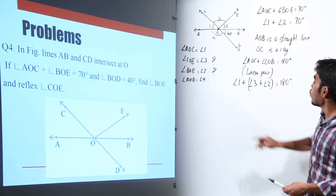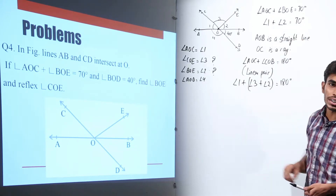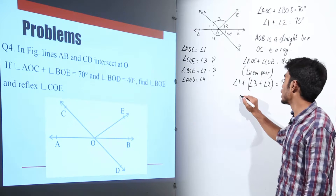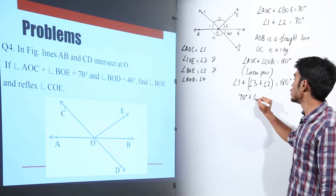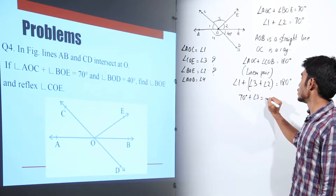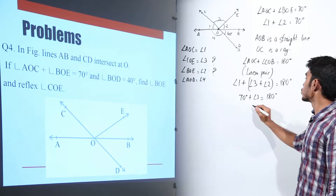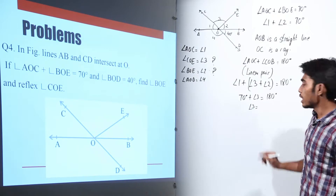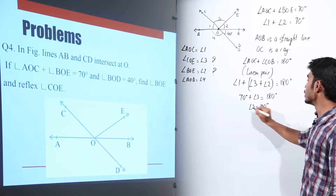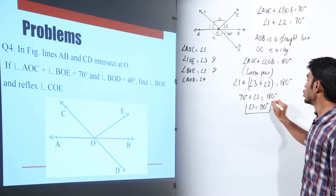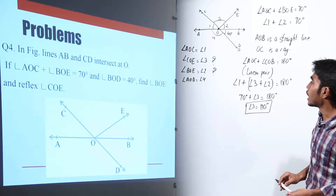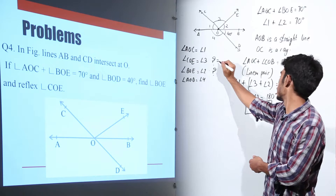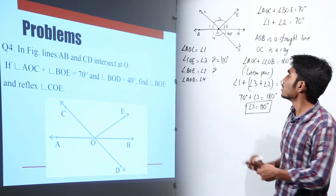Since angle 1 plus angle 2 equals 70 degrees, substituting that value: 70 degrees plus angle 3 equals 180 degrees. So angle 3 equals 180 minus 70, which is 110 degrees. We have found angle COE, which is 110 degrees.